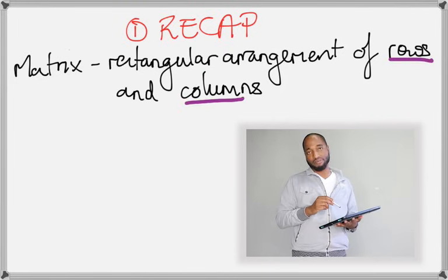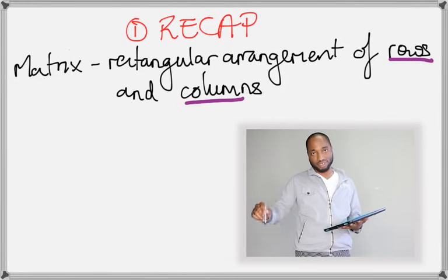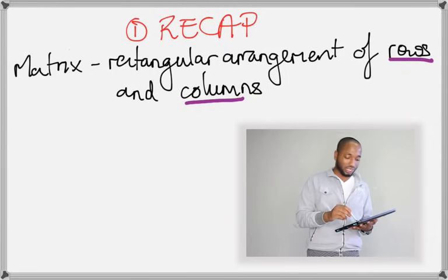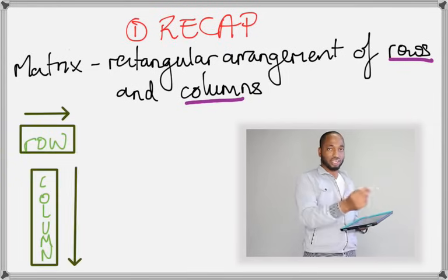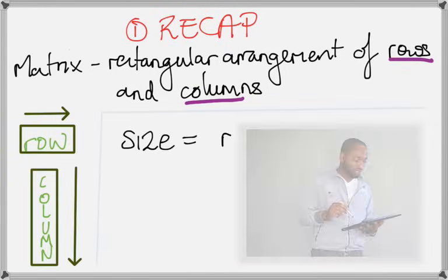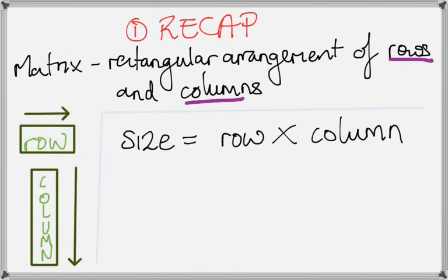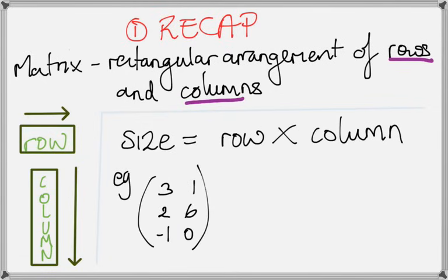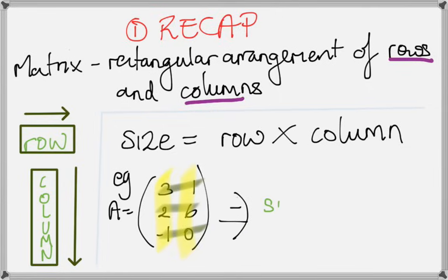The definition of a matrix: it's a rectangular arrangement of rows and columns. Rows are horizontal, columns are vertical. The size is equal to the rows by the columns. For example, if we name this matrix A — we can name a matrix after a capital letter — we can tell its size. There are three rows and two columns, so the size of A is three by two.